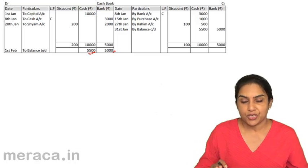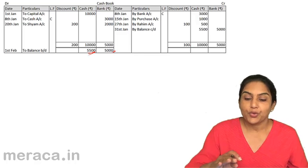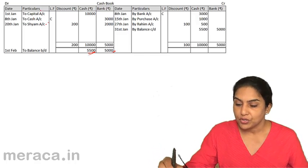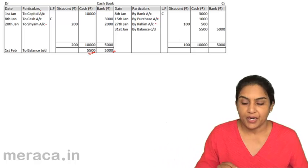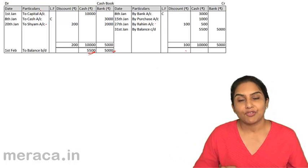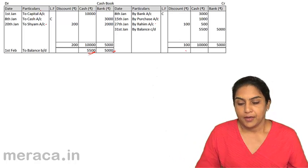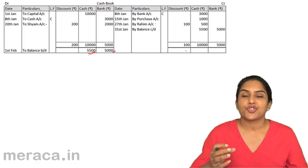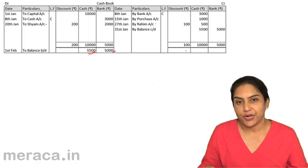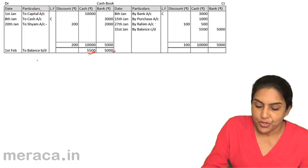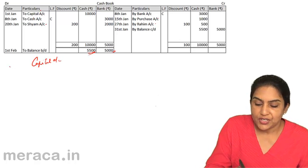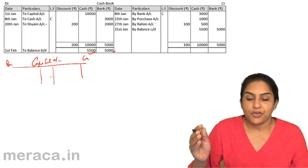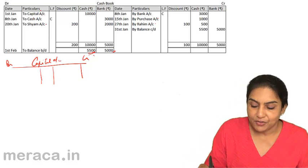While we have the cash account and the bank account here, we need to post the effect of all this to the capital account, to Shyam's account, to Purchases account, to Raheem's account, to Discount Allowed, and to Discount Received. This is from the debit side of the cash book. When we post, we post it to the credit side of the corresponding account.